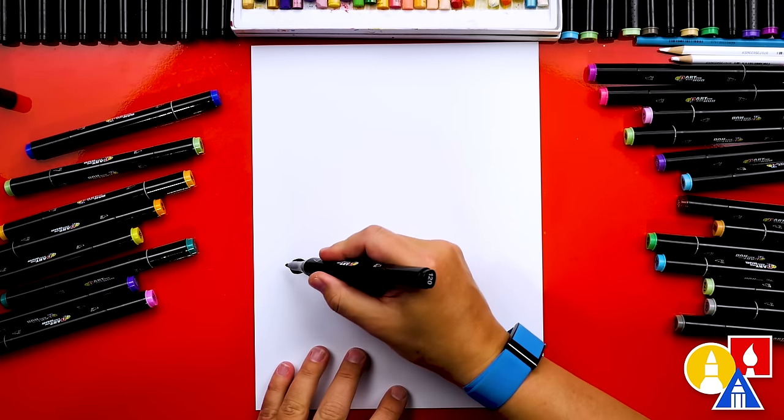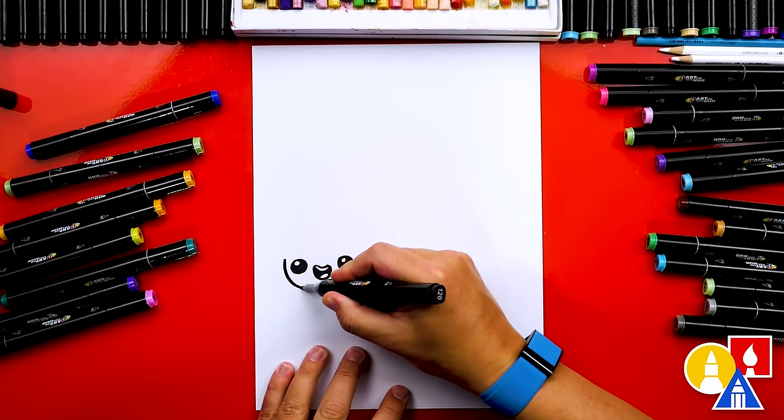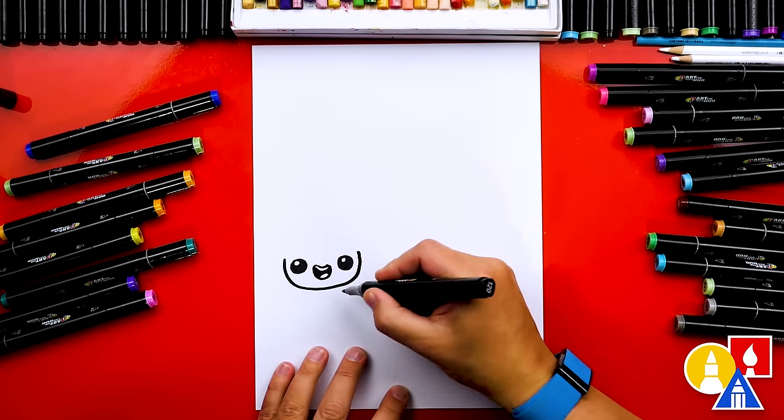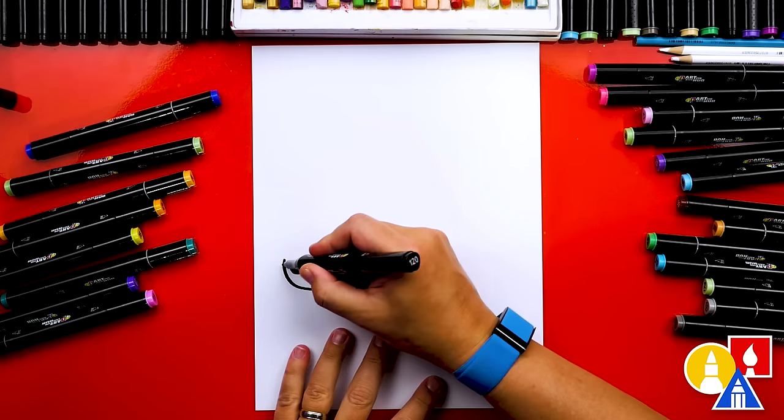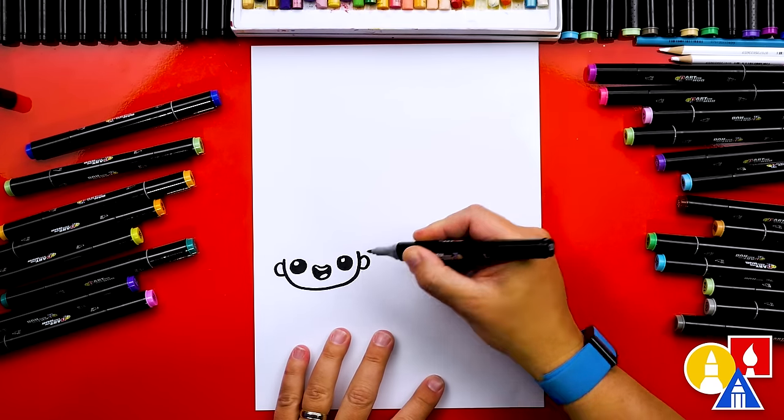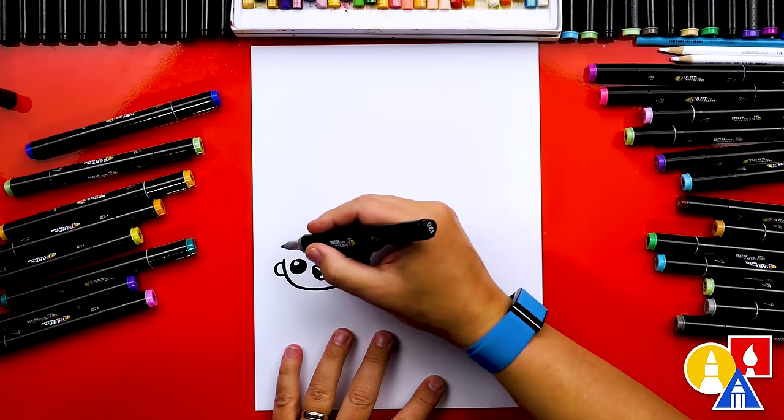Okay now let's draw the face. We're going to start here and we're going to draw the letter U for the cheeks and also the chin. Then we can draw an ear. We'll draw a letter C and a backward C and then we can draw the hair.